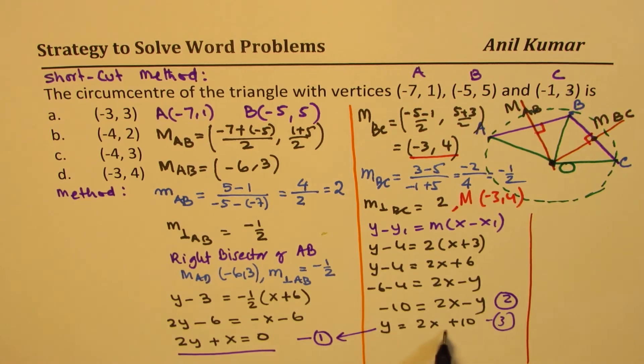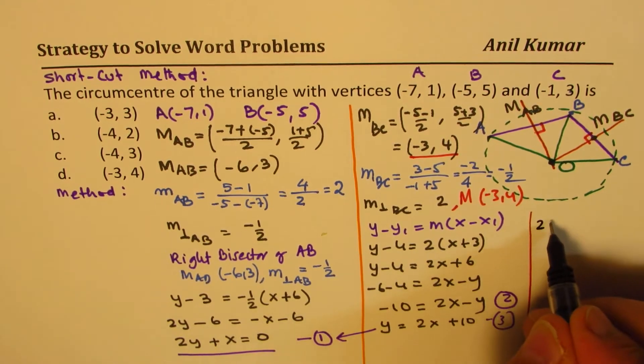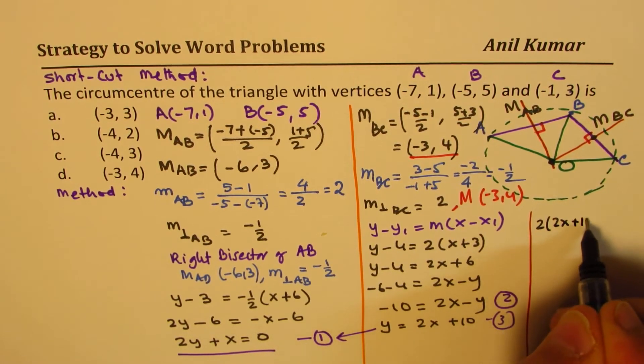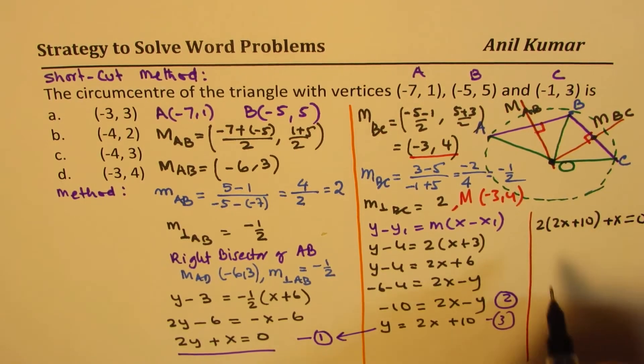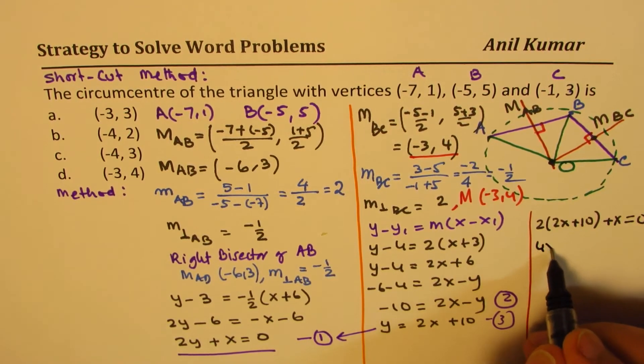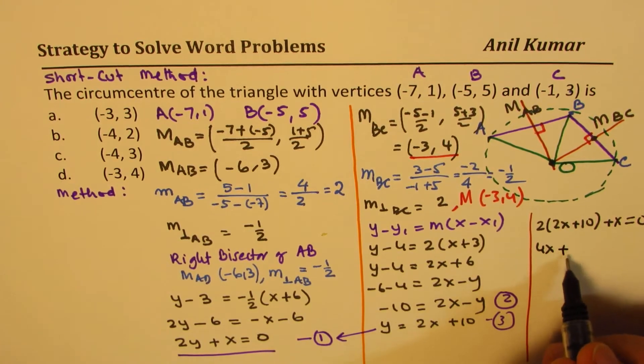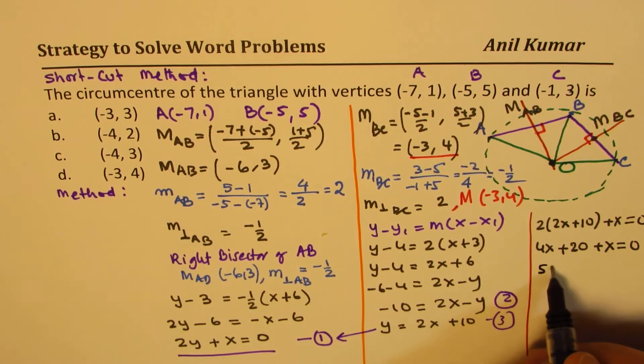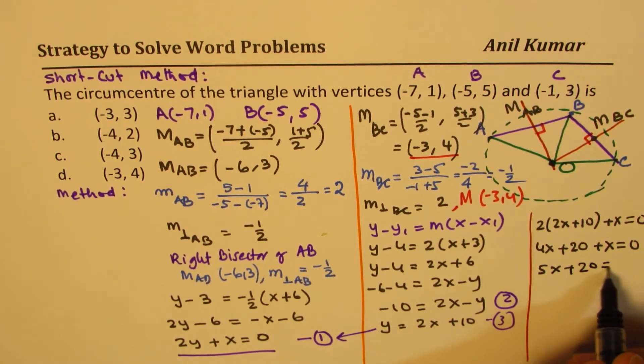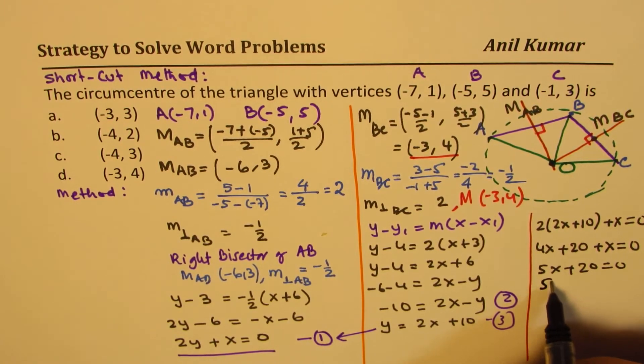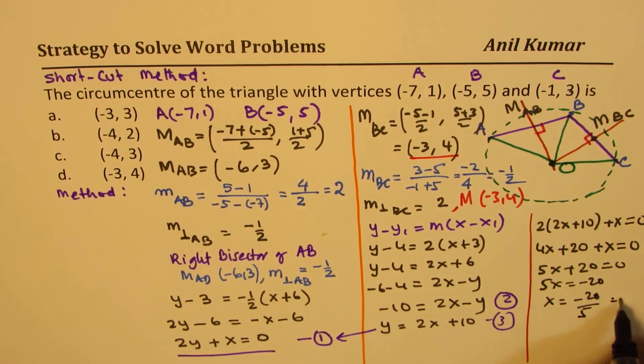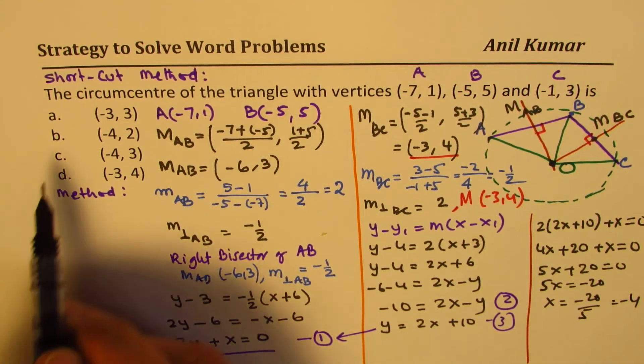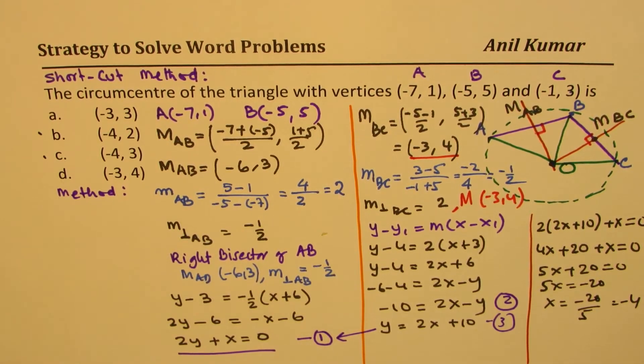So substituting 2x + 10 for y, we get 2 times (2x + 10) + x equals to 0, which is 4x + 20 + x equals to 0, or we get 5x + 20 equals to 0, or 5x equals to -20, or x equals to -20 over 5, which is -4. So one of these two values.